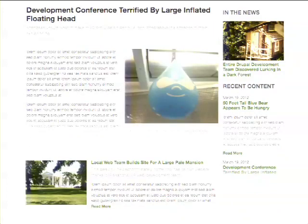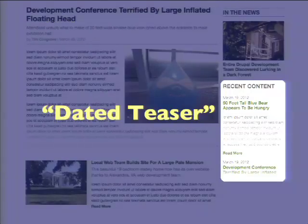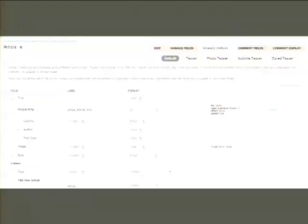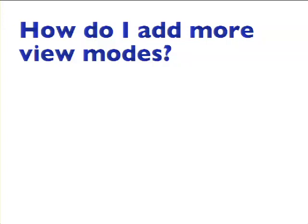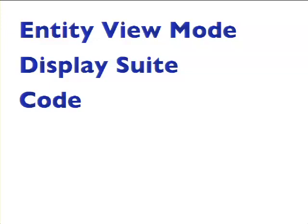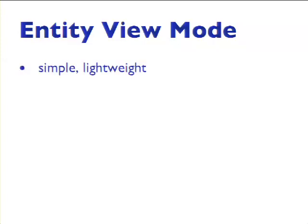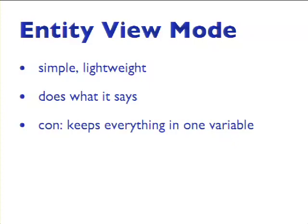We want to build other display types that Drupal doesn't automatically give us — our photo teaser, dated teaser, subtitle teaser. We need to actually have those in the admin so we can define what they display as. We need to create custom view modes. I'm going to show you three ways: the Entity View Mode module, Display Suite, and code. Entity View Mode is a great, very simple module. It does exactly one thing: it allows you to define new view modes for your entities. The one caveat is that it keeps all your view mode definitions in one variable, so if you use Features you'll get dependency problems. If you're not using Features, it's very simple and lightweight — go with it.